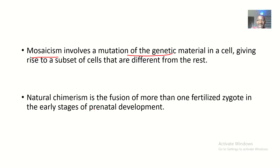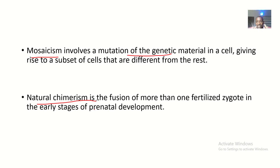Natural chimerism is a fusion of more than one fertilized zygote in the early stages of prenatal development. It occurs mostly at the zygotic stage, where two or more fertilized zygotes are fused together.